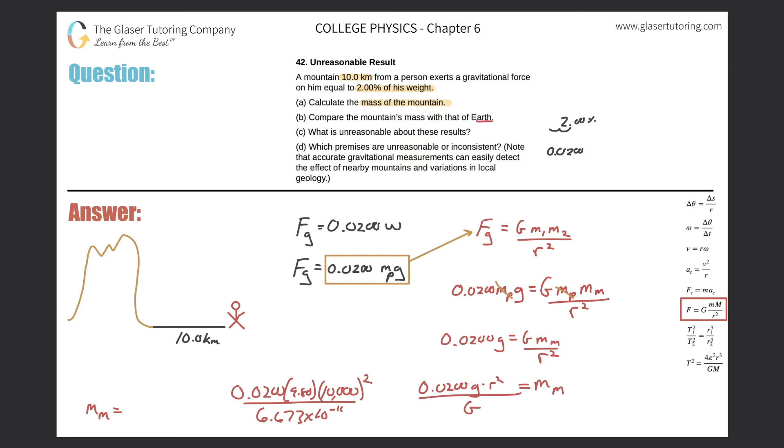So here we get 0.02 times 9.8 times 10,000 squared, all divided by 6.673 times 10 to the minus 11. And we get 2.94, so 2.94 times 10 to the 17th, times 10 to the 17th, and that is in kilograms. All right? So this would be the mass of the mountain. All right. So now that takes care of letter A. So let me just write A over here. And now let's take a look at letter B.